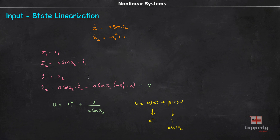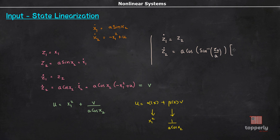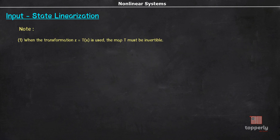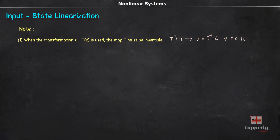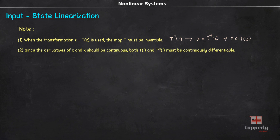Therefore, the state equations in new coordinates z1 and z2 can be derived using these relations, giving z1-dot = z2 and z2-dot = v. When the transformation z = T(x) is used, the map T must be invertible — the inverse map T^{-1} must exist such that x = T^{-1}(z) for all z in T(D), where D is the domain of T. Furthermore, since the derivatives of z and x should be continuous, both T and T^{-1} must be continuously differentiable.